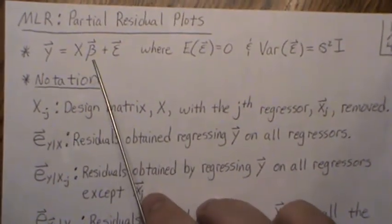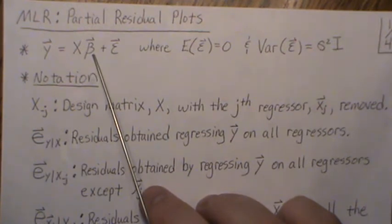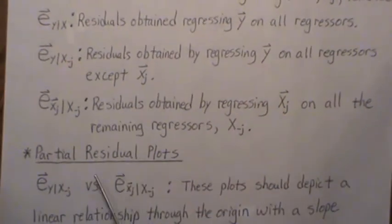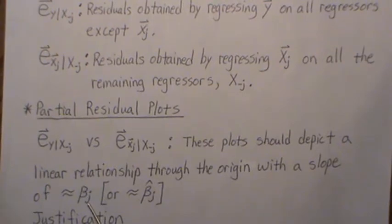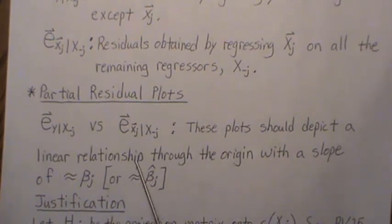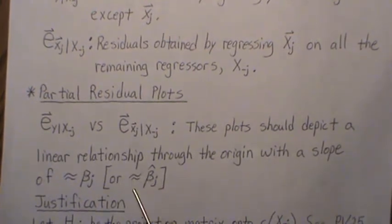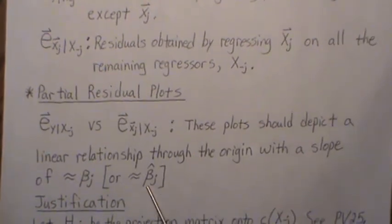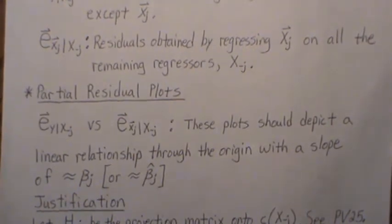In the original model we developed least squares estimates for beta, and the jth component is beta j hat. By finding these residuals and regressing them onto each other, it creates a slope of beta j. That's in theory, and we'll justify it in just a second. But in practice, does regressing these residuals onto each other produce a slope equal to the least squares estimate for beta j? And it does — that's a cool proof we'll do on pages two and three.